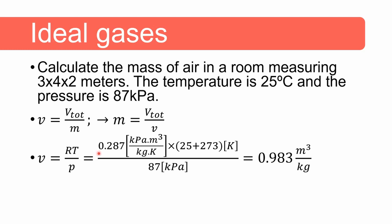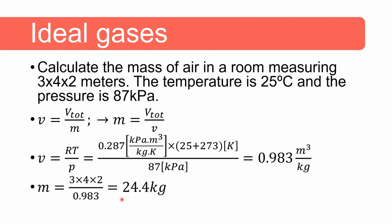Remember that the value of R, the gas constant, is different for every substance. You can find this value in tables for ideal gases in textbooks or on the internet. Also remember when using the ideal gas law that you need to convert the temperature from degrees Celsius to Kelvin. We get an answer for specific volume of 0.983 cubic meters per kilogram, and we can convert that to mass and get an answer of 24.4 kilograms of air inside that room.